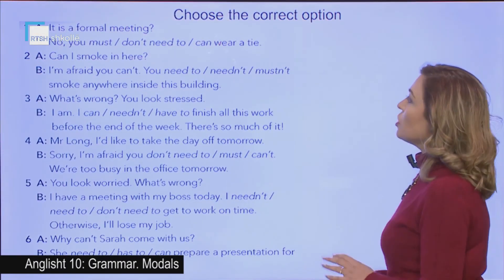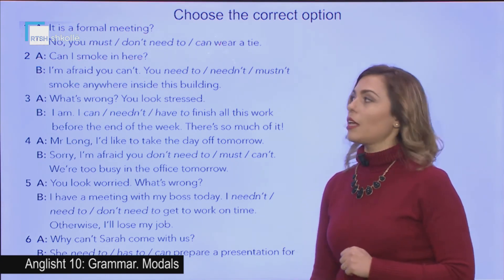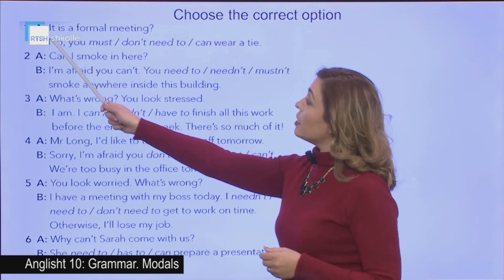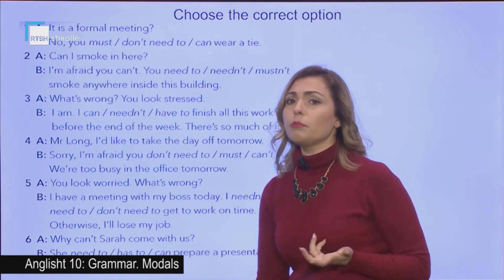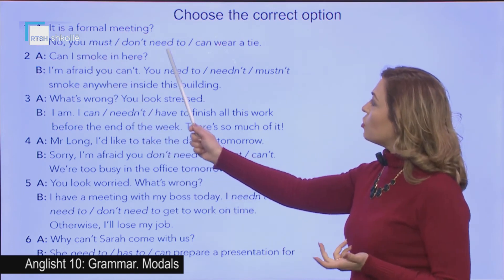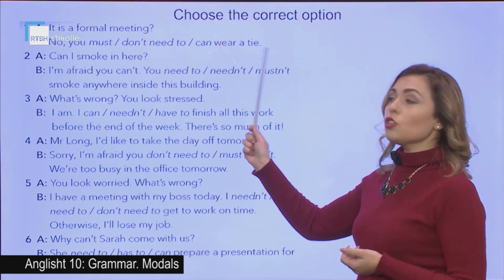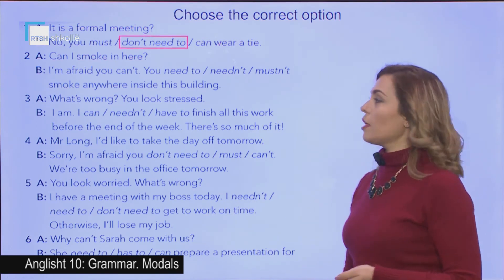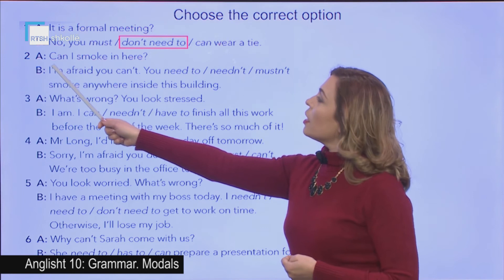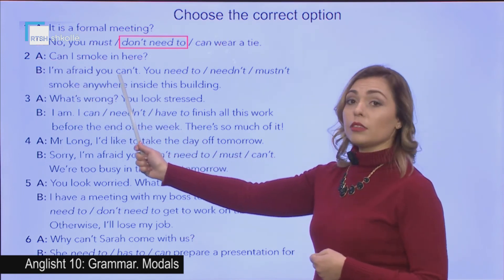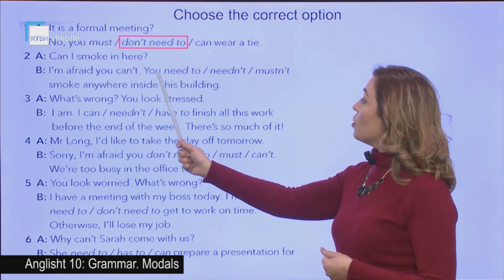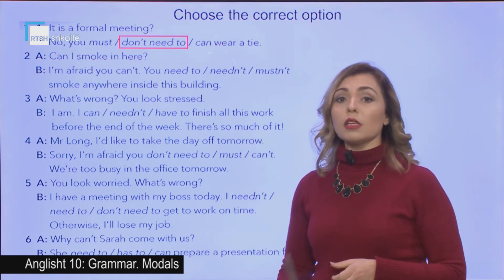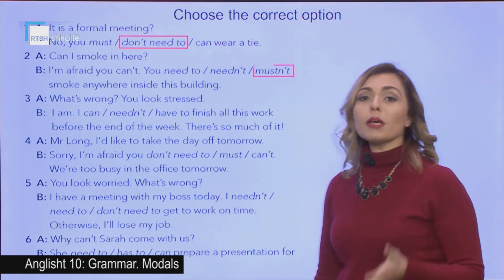Now we need to choose the correct option from the modal verbs we discussed. Number one: 'Is it a formal meeting?' B says, 'No' — you must, you don't need to, or you can wear a tie. Since it is not a formal meeting, you don't need to wear a tie. Number two: 'Can I smoke in here?' 'I'm afraid you can't.' Since you can't smoke, you mustn't smoke anywhere inside this building.